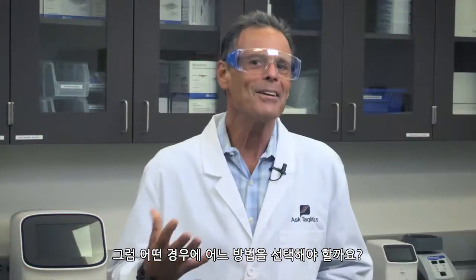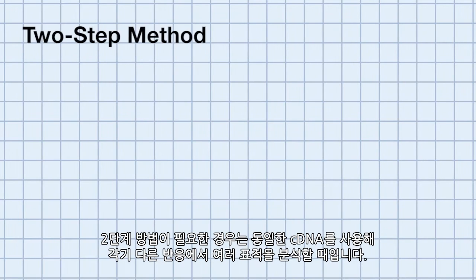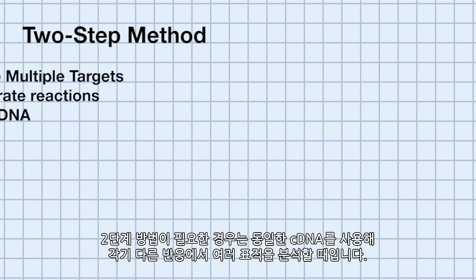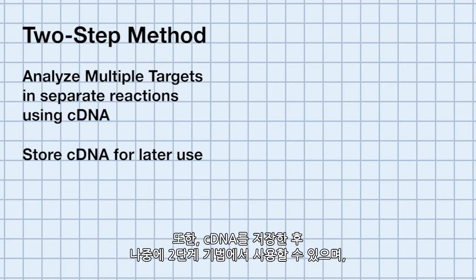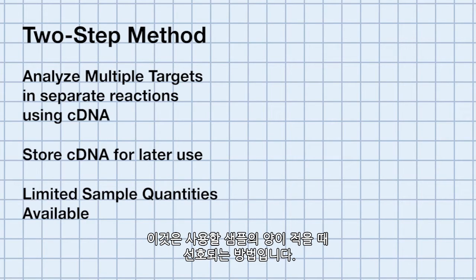So how do you know which method to choose? The two-step method is required when analyzing multiple targets in separate reactions using the same cDNA. For instance, one cDNA synthesis could be used to detect 10 different gene expression targets. You can also store the cDNA for later use with a two-step approach, and this is the preferred method for use with limited sample quantities.